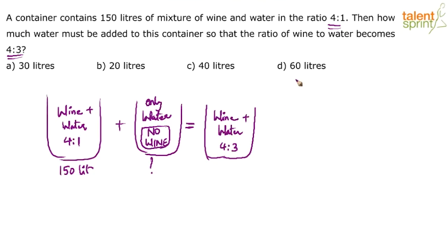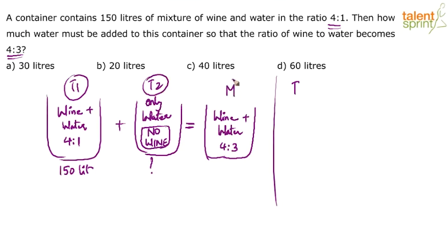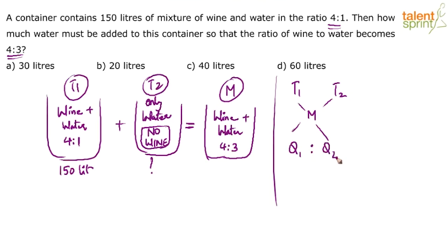The rule of allegation — what do we do? Allegation rule generally states that, let's say this is type 1, this is type 2, and this is the mixture. You write something about type 1, type 2, and the mixture in this form. When you take the cross differences, you get the ratio of q1 to q2.